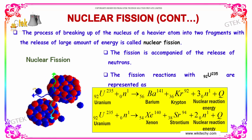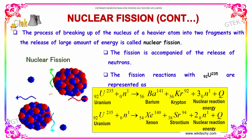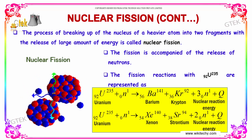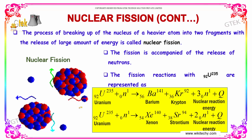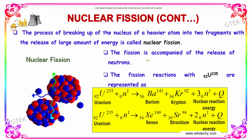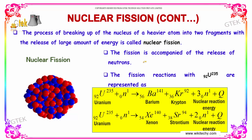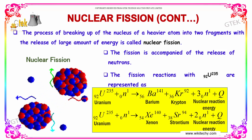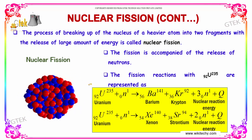The process of breaking up of the nucleus of a heavier atom into two fragments with the release of energy is referred to as nuclear fission. The fission is accompanied by the release of neutrons.